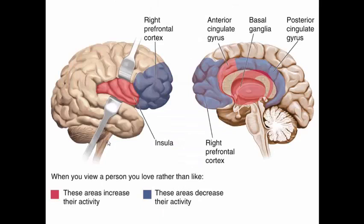When looking at a functional MRI, the areas that light up when you view a person you love rather than just like tend to increase in activity, while the prefrontal cortex — which helps you plan and rationalize — decreases when you're falling in love. You go a little insane; you're not as rational, and yet you're highly motivated to seek out the person you love. Love is a sickness. If you have a friend falling in love, be a little compassionate; if somebody is falling in love with you, remember they're going through a little bit of craziness — be kind.